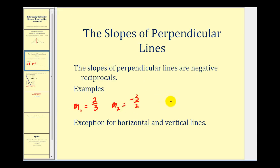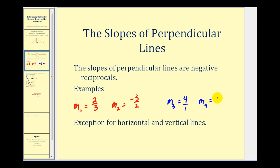Let's say we had another line with a slope of four. If it's not in fraction form, it's often helpful to make it into a fraction by putting it over one. Therefore, if that line was perpendicular, the slope would have to be negative one-fourth.